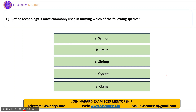Biofloc technology is most commonly used in farming which of the following species? Biofloc technology is most commonly used in the culture of shrimps. Generally, biofloc technology is used when the oxygen requirement for the fishes is low, the light requirement is low, and they can tolerate the biofloc — that is organic aggregates in the water — and generally bottom dwellers and bottom feeders are preferred. Salmon and trout require low-temperature waters, and biofloc technology requires an optimum temperature for the microbes to grow, so salmon and trout cannot tolerate this technology.